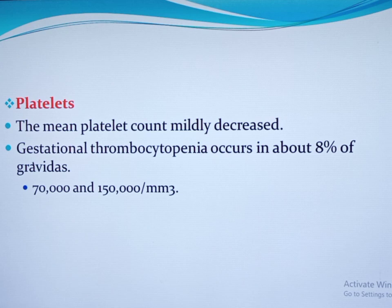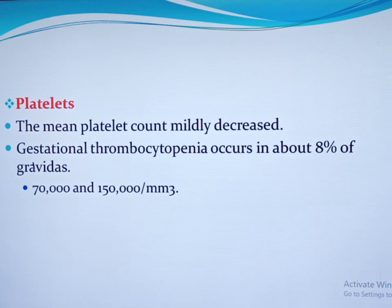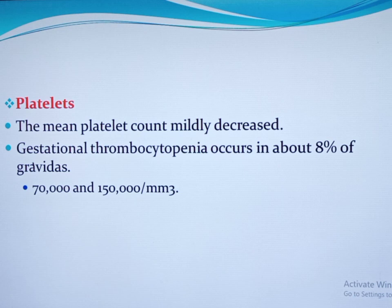Regarding platelets, the mean platelet count mildly decreases during pregnancy. However, contrary to their number, platelet function is increased in normal pregnancy in order to maintain hemostasis. Gestational thrombocytopenia occurs in 8 percent of gravidas, with platelet counts reaching 70,000 to 150,000 per mm³. This does not affect pregnancy outcome and returns to normal within one to two weeks postpartum. The reason for gestational thrombocytopenia is thought to be immunologic, with similarities to immune thrombocytopenic purpura, and also explained by increased consumption of platelets during pregnancy.